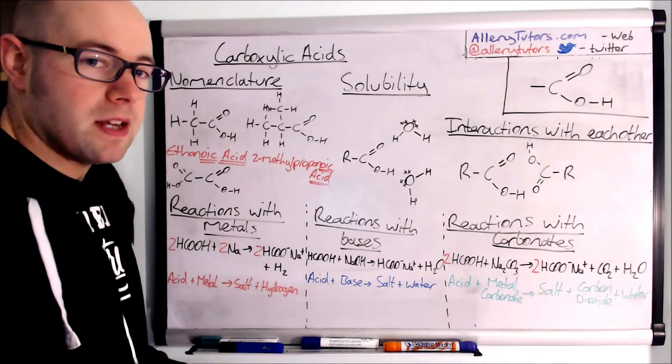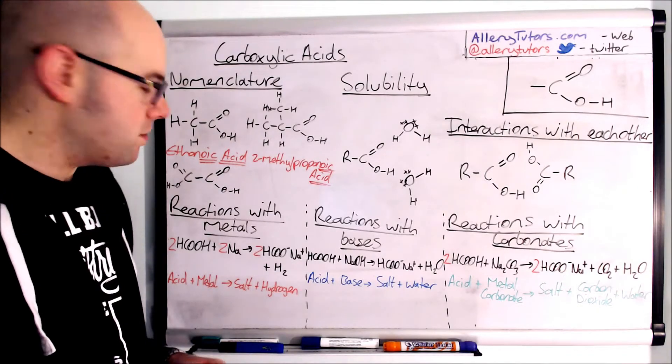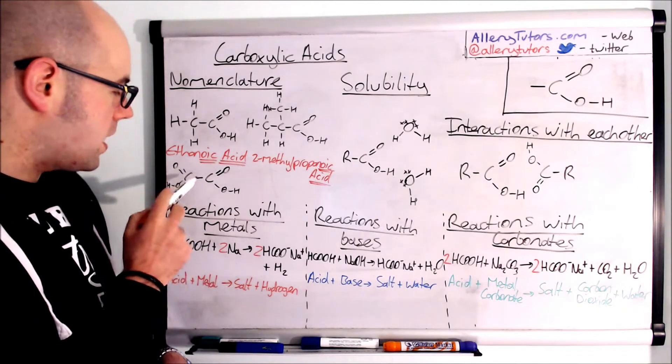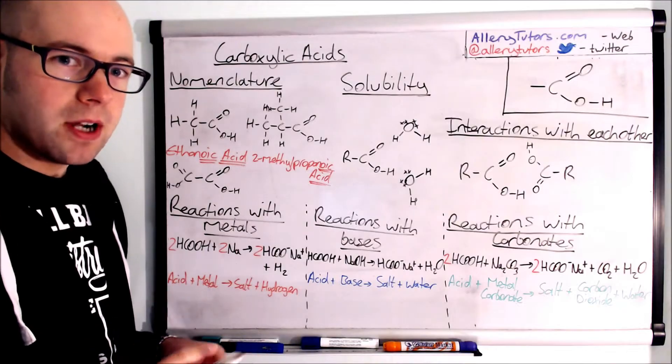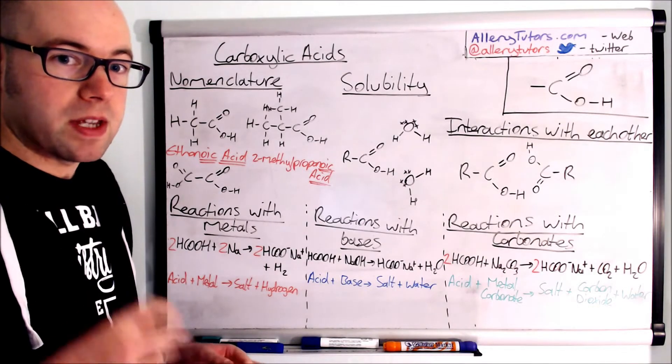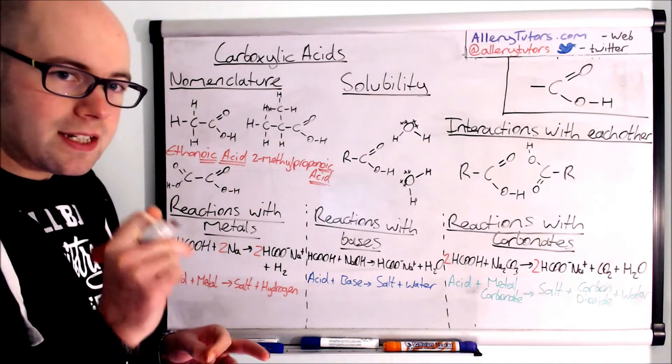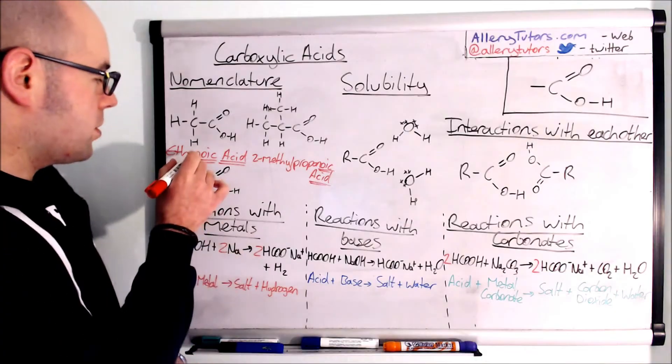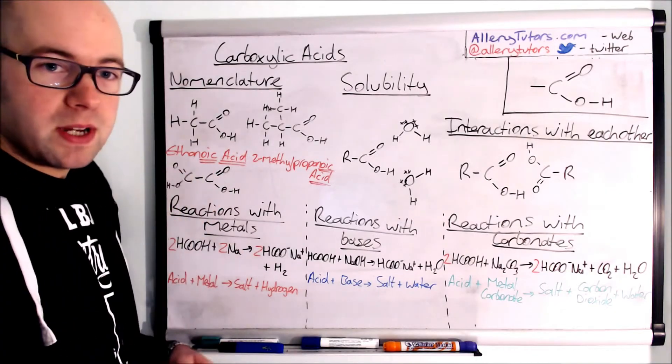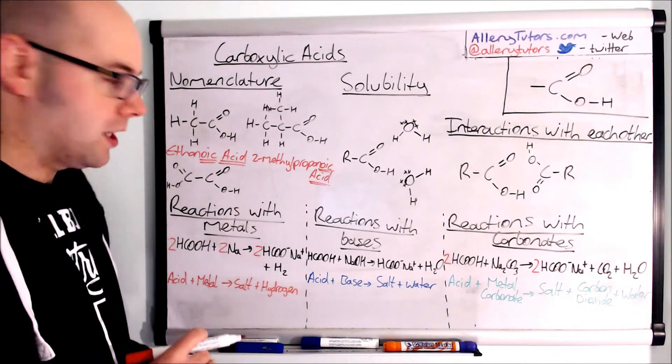Now sometimes we can have two carboxylic acid groups attached to it. You can see this one here and again if we have two of the same functional group then we prefix it with di and if we have three it will be tri. This one is slightly different in terms of its nomenclature because we have to include the E in between the end of the carbon chain and the end part of the carboxylic acid.